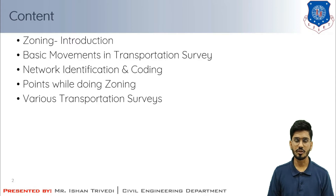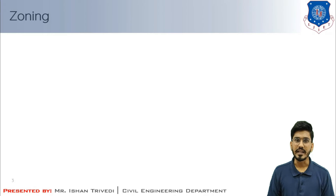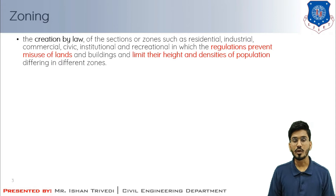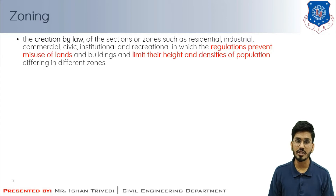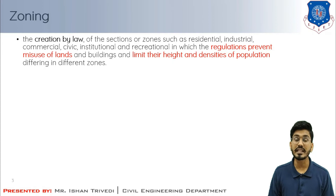First we will understand what zoning is and its importance. The defined study area is subdivided into smaller areas which we call a zone. The term zone ordinarily refers to a concentric ring or belt with its central focal point. Zoning is defined as the creation by law of sections or zones — such as residential, industrial, commercial, civic, institutional, and recreational — in which regulations prevent misuse of lands and buildings and limit their height and density of population, differing in different zones.